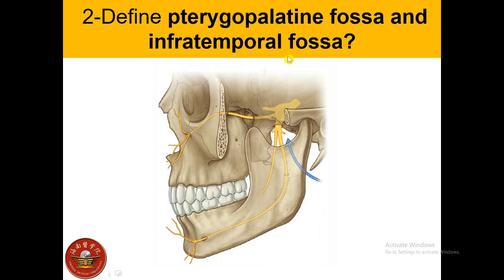The infratemporal fossa — 'infra' means below, so below the temporal region. This area is between the posterior aspect of the ramus of the mandible and posterior to the upper jaw. The important structure passing through this fossa is the mandibular nerve, which is also a branch of the trigeminal nerve. So: pterygopalatine fossa — maxillary nerve; infratemporal fossa — mandibular nerve.